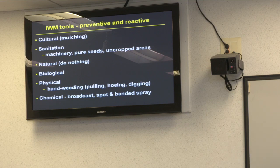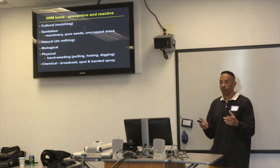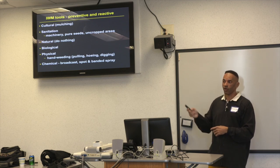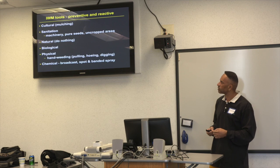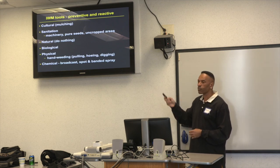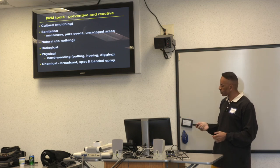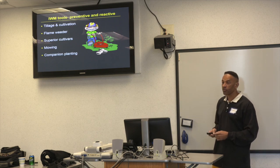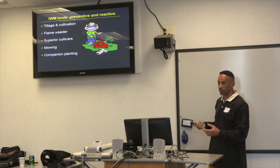Sometimes doing nothing makes economic sense — if weeds break out late in the season and removal costs more than the damage. However, for a highly prolific weed like Palmer amaranth, which can produce thousands of seeds, even one plant warrants removal because of future problems. Biological control through weed seed predators exists but has limited research. Hand pulling, chemical spot-spraying rather than broadcasting, tillage, cultivation, flame weeders, superior cultivars, mowing to prevent seed set in non-cropped border areas, and companion planting all serve as additional tools.